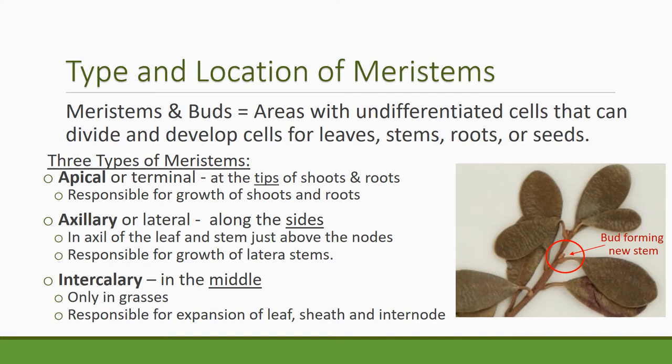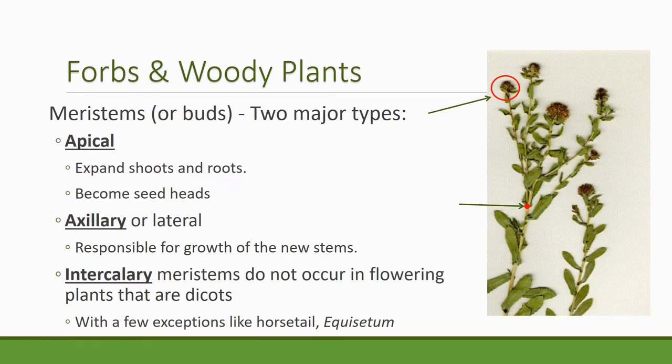Intercalary meristems are responsible for the expansion of leaf sheaths and internodes. Flowering plants like shrubs and forbs generally don't have intercalary meristems — in fact, they don't have them at all. So let's begin by talking about forbs and woodies and get the principles laid down, then we'll apply them to grasses. In forbs and woody plants, meristems or buds are really of two types. Apical buds are the ones at the top — they turn into flower heads or seed heads as the plant matures, expanding it up above the soil surface.